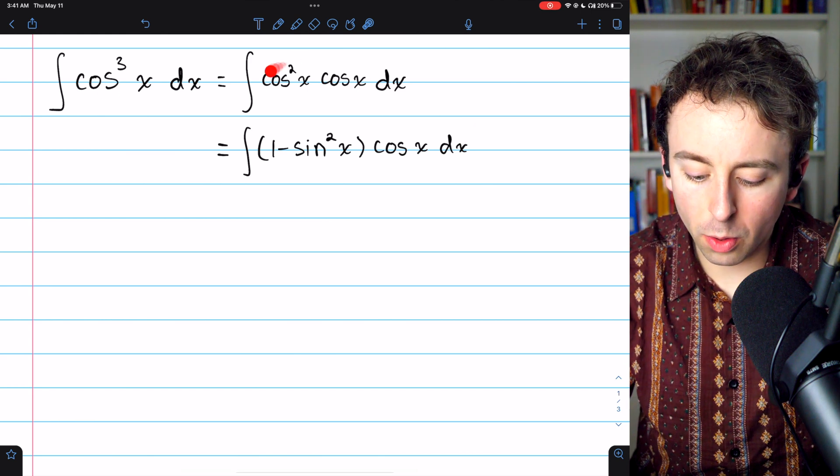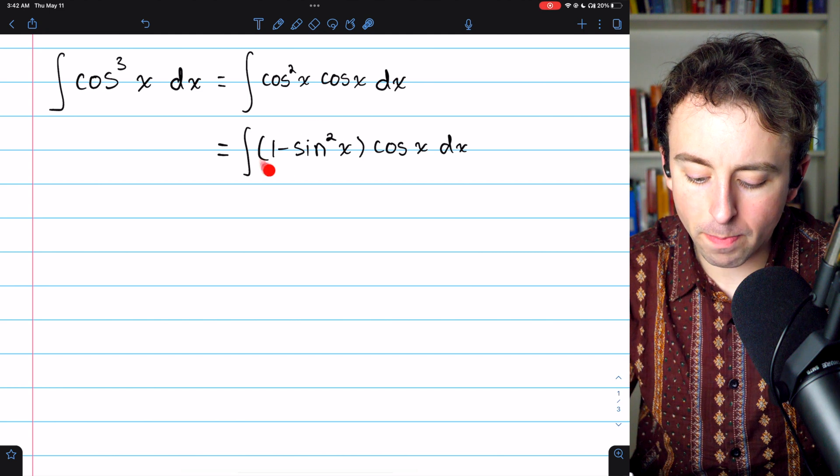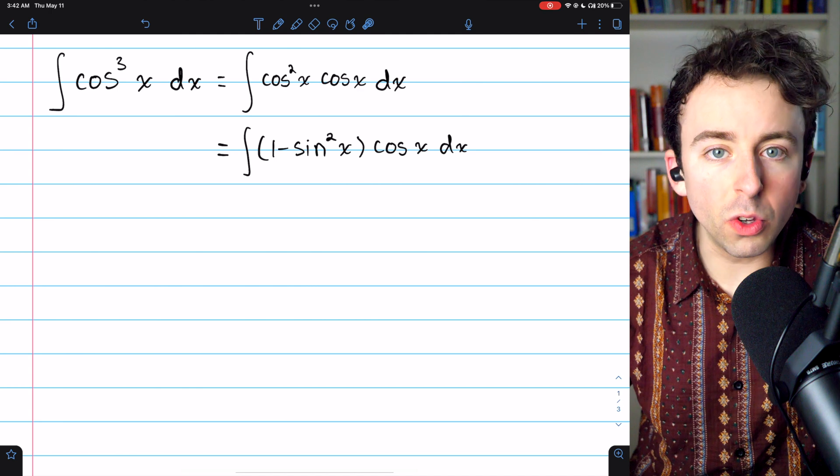So cosine cubed is the same as cosine squared times cosine, but cosine squared we know is the same as 1 minus sine squared. Now that we've got a sine and a cosine, we can use u substitution.